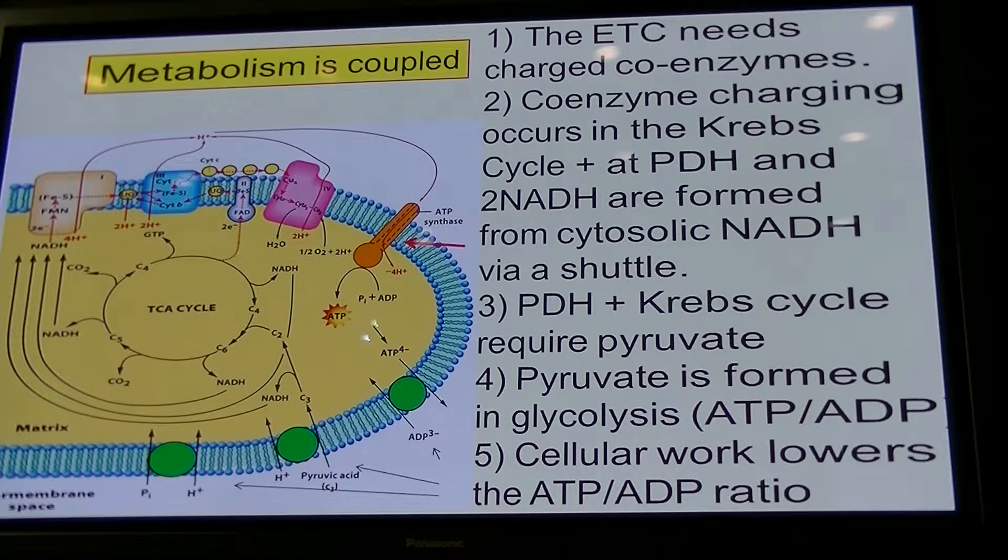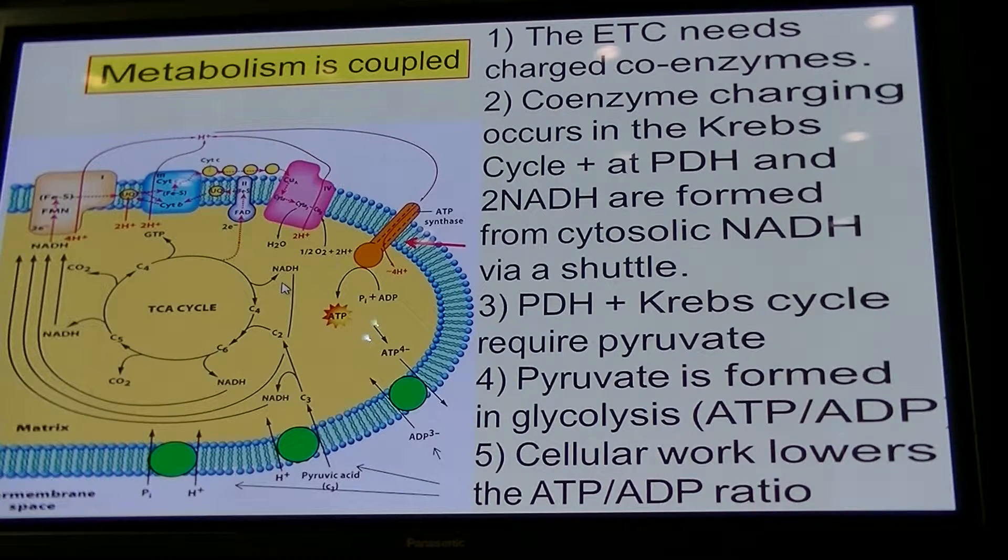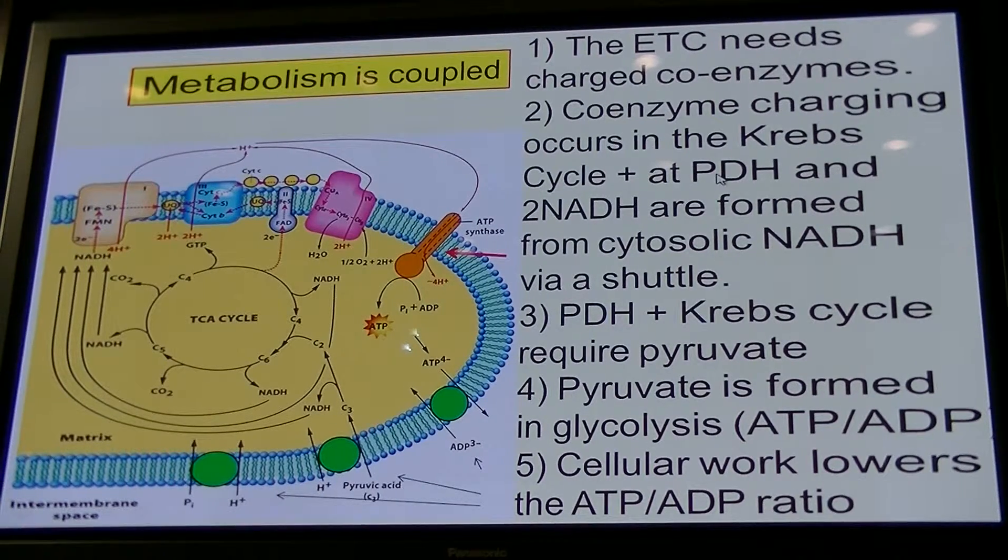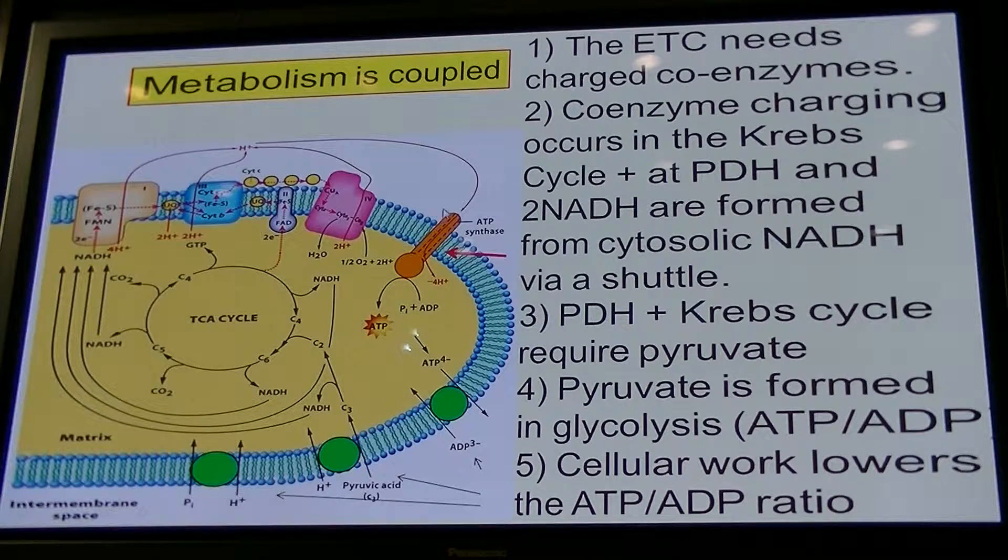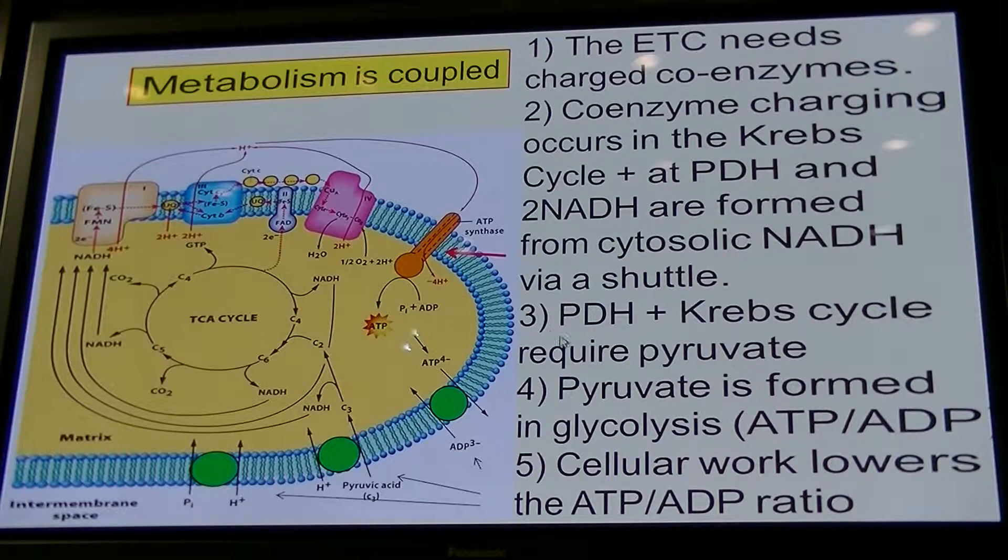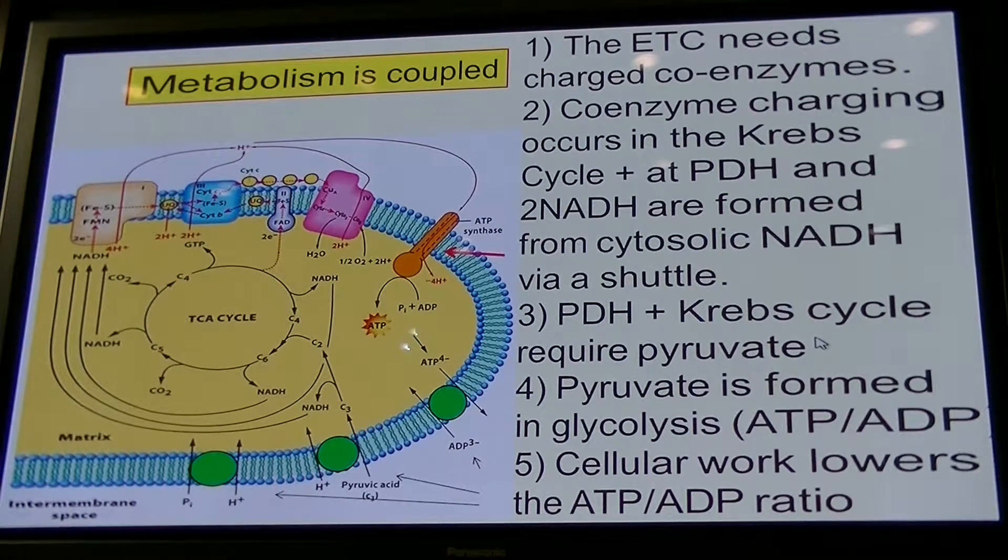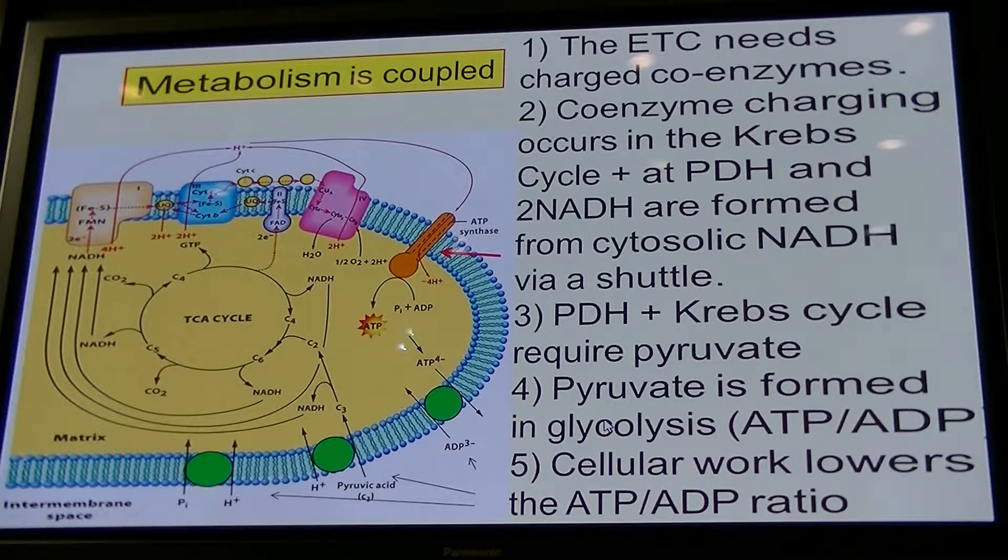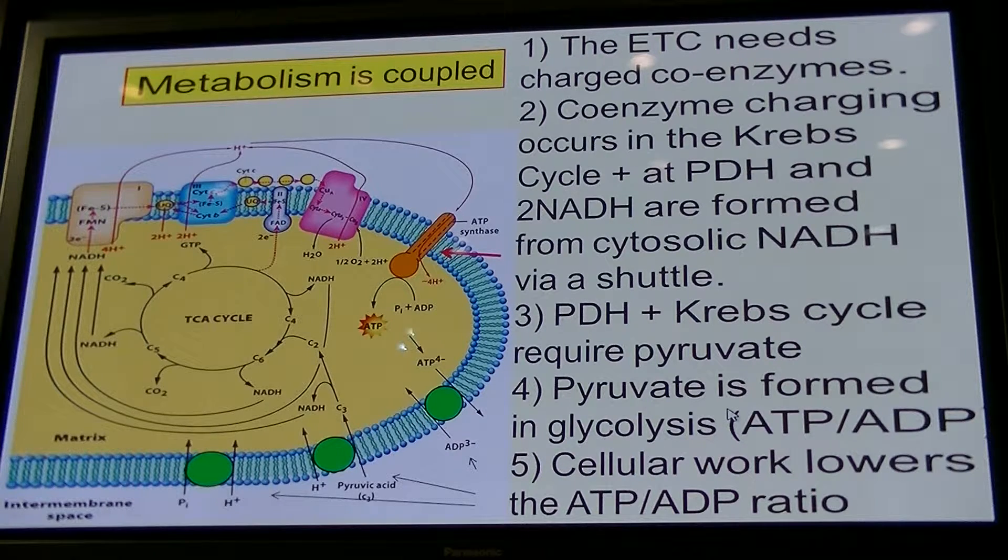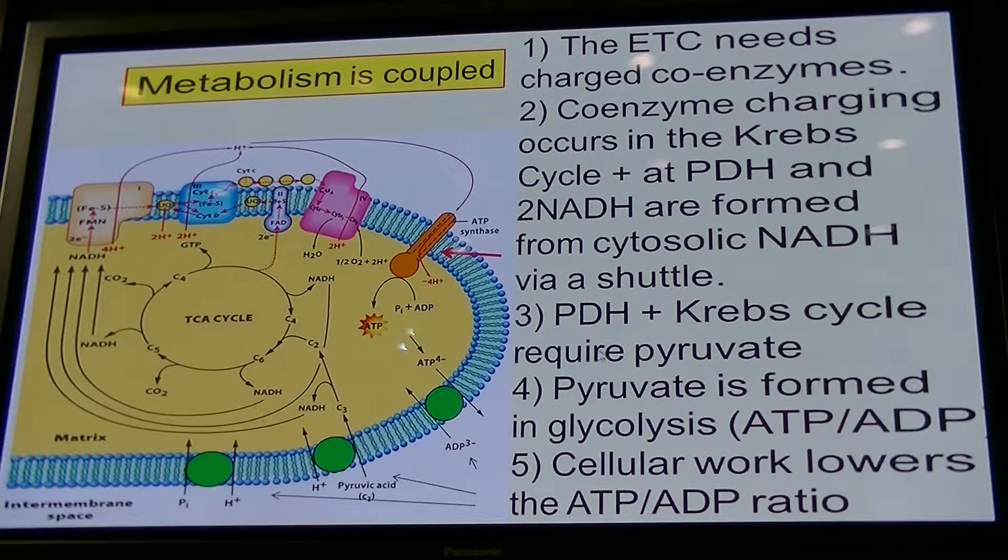Very important point to remember is that electron transport will only occur if there are coenzymes that can donate electrons. And these coenzymes need to be charged in the Krebs cycle and in the matrix by pyruvate dehydrogenase, PDH. The matrix enzymes of the Krebs cycle and pyruvate dehydrogenase require pyruvate, which needs to be available from the cytosol. Pyruvate is formed in glycolysis in response to a drop in the ATP over ADP ratio. So when there's a need for ATP because you're doing work, glycolysis picks up and you start this whole process of charging your coenzymes, which then feed into the electron transport chain.